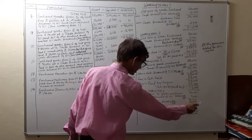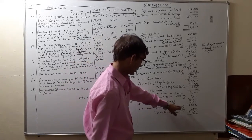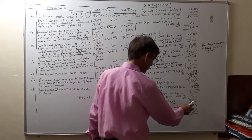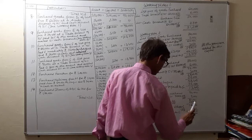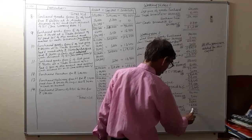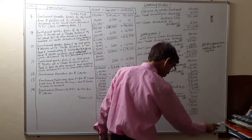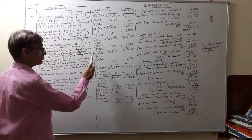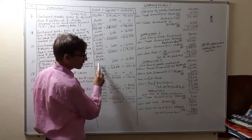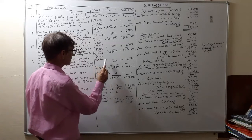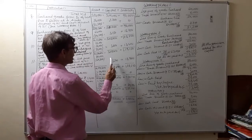Balance after trade discount is 81,000. Cash paid is 81,000 into 80 percent equals 64,800; balance remaining is 16,200. Cash discount at 5 percent on the amount paid of 64,800 equals 3,240. So 12,960 is left to be paid to G. The total purchase was 81,000 added to assets; 64,800 paid is subtracted. Cash discount of 3,240 is the gain added to capital.